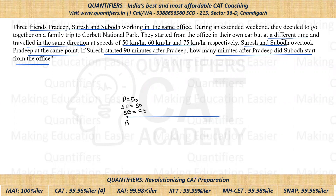Since Suresh and Subodh overtake Pradeep at the same point, all three of them are together at point B. One approach is relative speed, but a better concept is: all of them travel from point A to point B, so their distance is constant. When distance is constant, speed is inversely proportional to time — meaning the ratio of speeds is the reciprocal of the ratio of times. We just need to apply this concept.